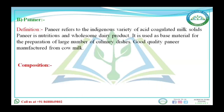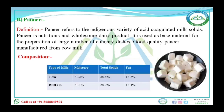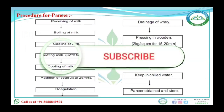Paneer is also an indigenous variety of acid coagulated milk solid. Cow milk paneer: 71.2% moisture, 28.8% total solids, 13.5% fat. Buffalo milk paneer: 71.1% moisture, 28.9% total solids, 13.1% fat.